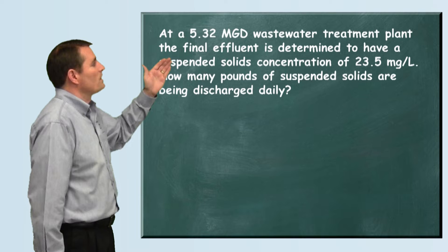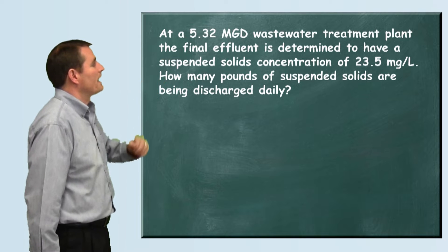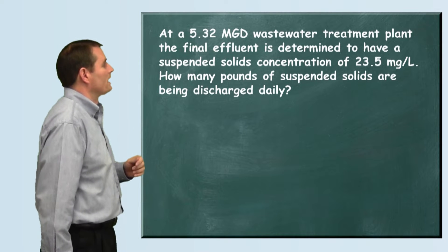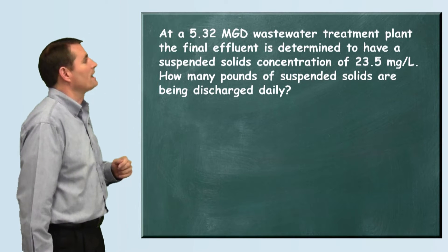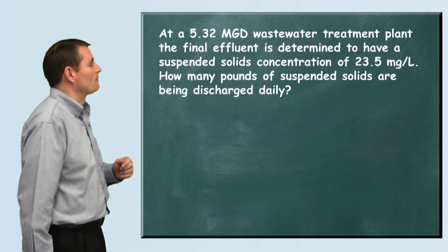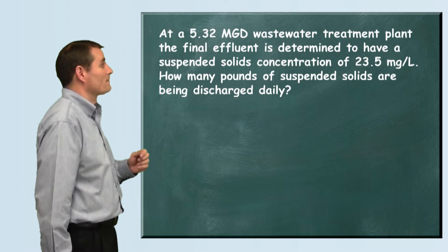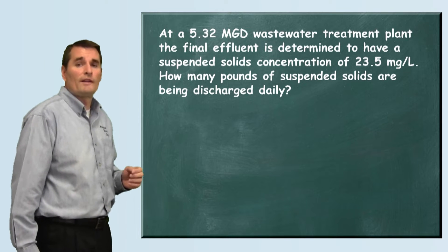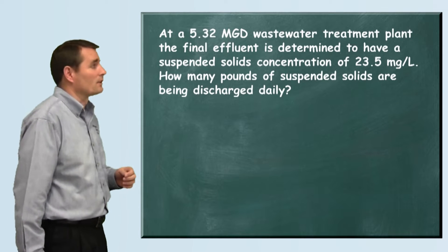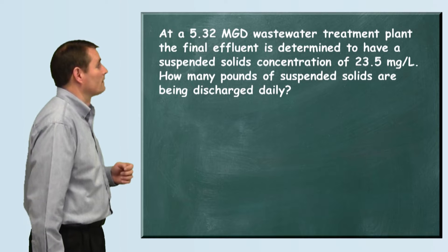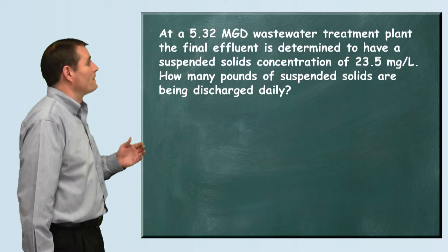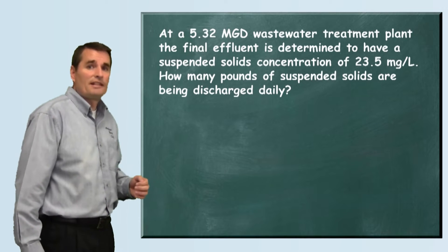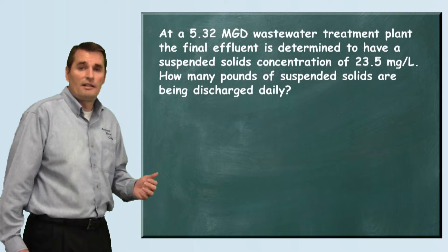At a 5.32 million gallons per day wastewater treatment plant, the final effluent is determined to have a suspended solids concentration of 23.5 milligrams per liter. How many pounds of suspended solids are being discharged each day?